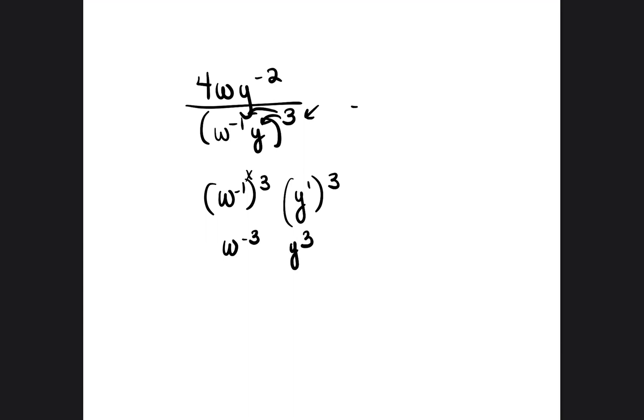So on the bottom we're now going to have w to the negative 3, y to the third, and on the top we're going to have 4wy to the negative 2.